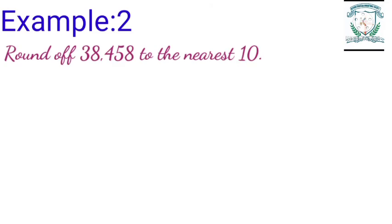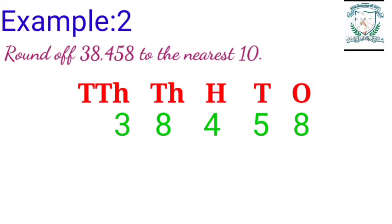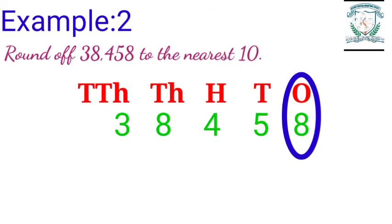Example two: round off 38,458 to the nearest ten. Step one: arrange the given number in a place value chart. Step two: identify the place to be rounded — in 38,458, the tens place should be rounded off to the nearest ten. Step three: check the digit in the ones place.